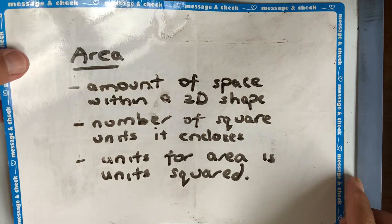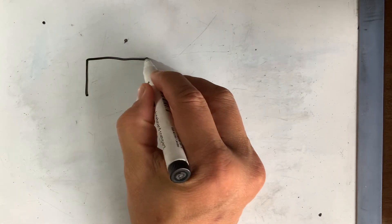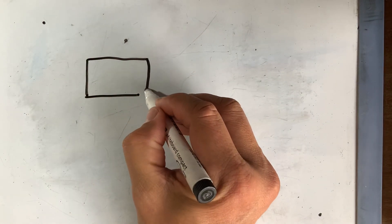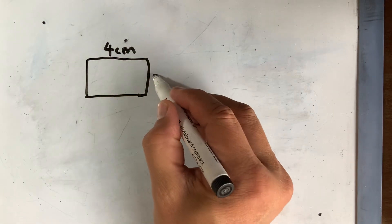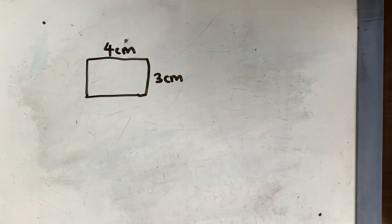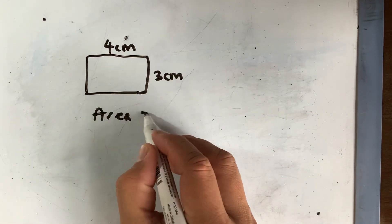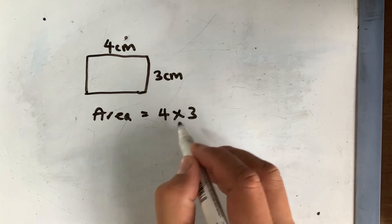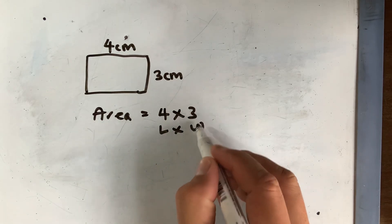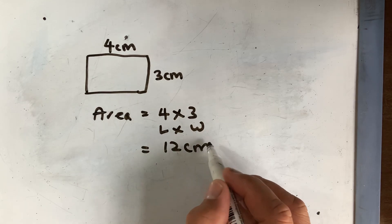Let's look at the definition now. Suppose we have a rectangle that is 4 cm by 3 cm. The conventional way to find the area is 4 times 3 — that is, length times width — and the answer is going to be 12 cm squared.